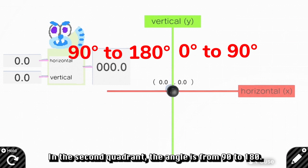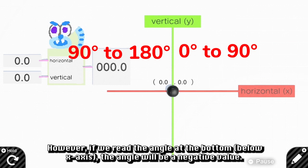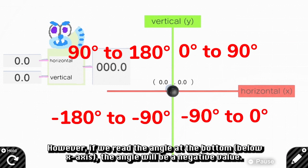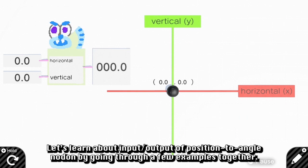In the second quadrant, the anchor is from 90 to 180. However, if we read the anchor at the bottom, the anchor will be a negative value. Let's learn about input-output of position to anchor Nodon by going through a few examples together.